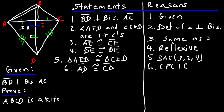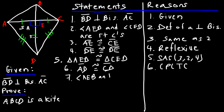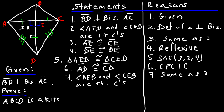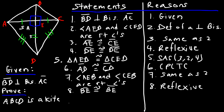Let's see if we can prove that the other two triangles are congruent. Statement seven: angles AED and CEB are also right angles — same reason as step two, because BD is the perpendicular bisector of AC. Statement eight: BE is congruent to BE by the reflexive property.